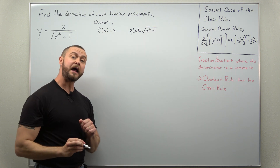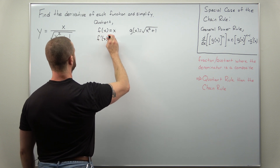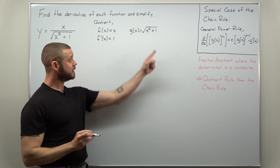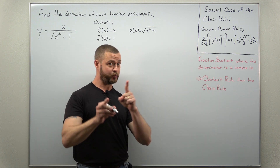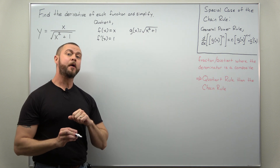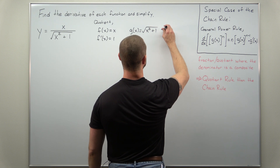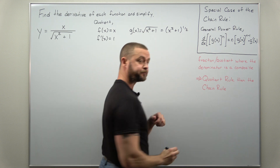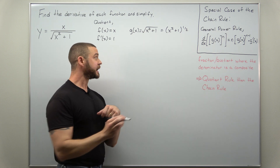We're going to calculate our individual derivatives. f prime, the derivative of x, just comes out to one. To calculate g prime, we're going to make use of a special case for the chain rule — the general power rule, which we've already used in several problems. I'm going to rewrite this as x squared plus one to the power one-half, and now we can differentiate that with the general power rule by bringing the exponent down.